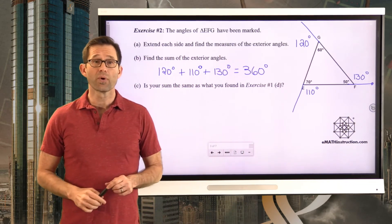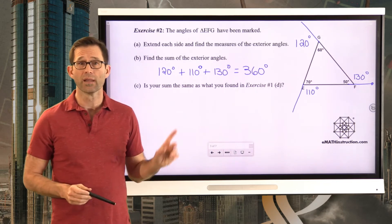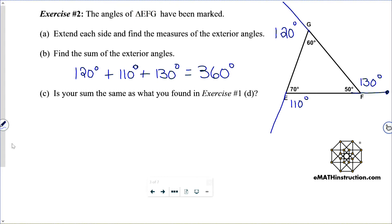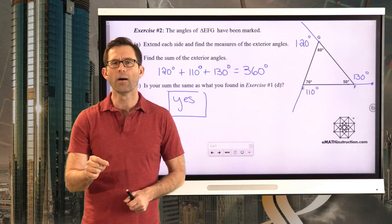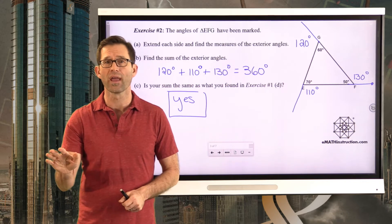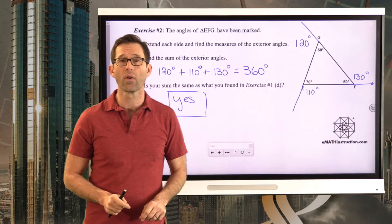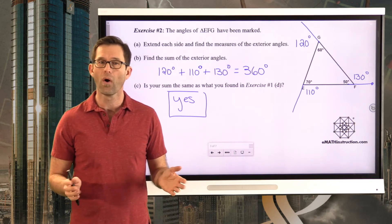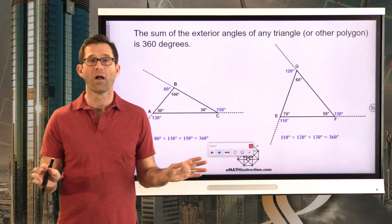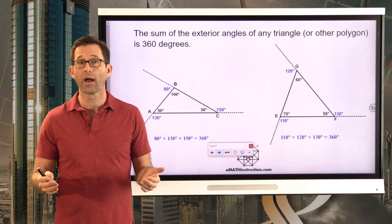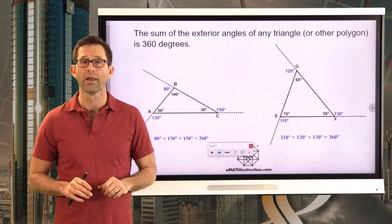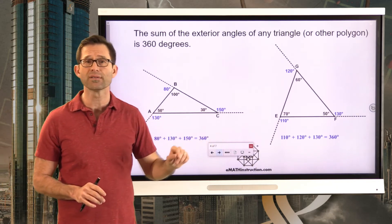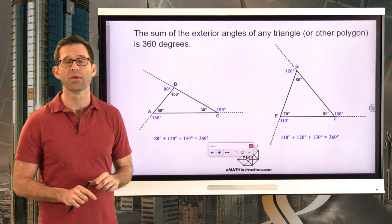Letter C asks: is the sum the same as what you found in exercise one letter D? And the answer is yes. One of the amazingly remarkable things is that it's always 360 degrees. Just as the sum of the angles of a triangle are always 180 degrees, the sum of the exterior angles of a triangle is always 360 degrees — always. And in fact it's any polygon. You could take an octagon, a rectangle, a parallelogram, a pentagon — it wouldn't matter. Draw on those, extend those sides, put in the exterior angles, add them all up, and they will always be 360 degrees. It's really a remarkable fact about geometry.